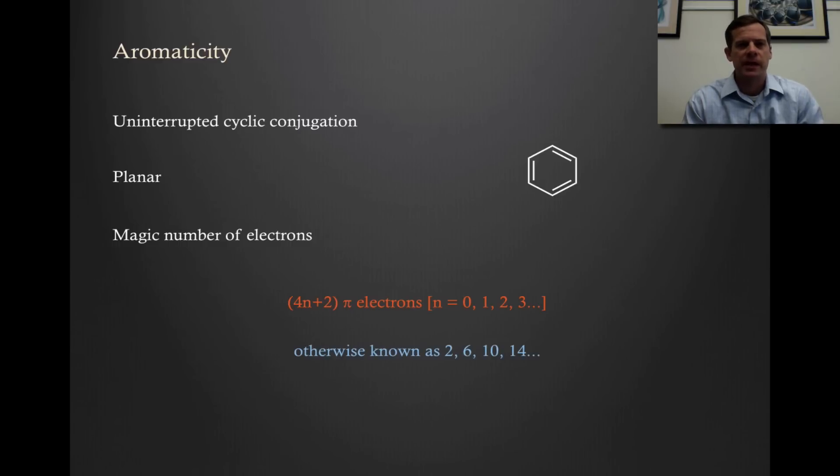We've developed an understanding of the requirements for aromaticity, which include uninterrupted cyclic conjugation, and as part of that we need to have planarity, and then there is this magic number of electrons, which is the 4n plus 2 pi electrons in that conjugated system.